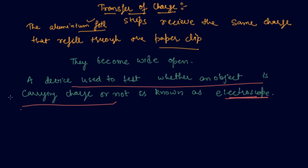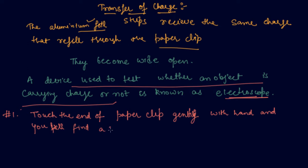How a charge is transferred from one body to another body through a metal conductor? I am giving you one example here: touch the end of paper clip gently with hand and you will find a charge in the foil strips. Through this example which I am taking here.